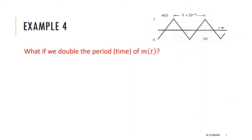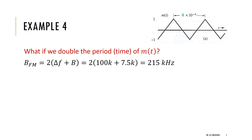Now consider doubling the period instead of the amplitude. The period doubles to 4×10⁻⁴ s, so the fundamental frequency halves to 7.5 kHz, and the message bandwidth becomes 7.5 kHz. For FM, delta_F does not change because it depends on the peak value M_p, which is still the same. So the FM bandwidth becomes 2×(100 + 7.5) = 215 kHz.